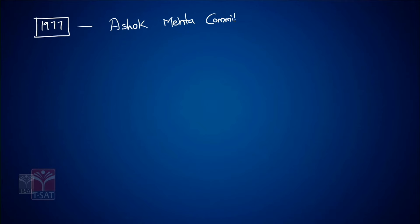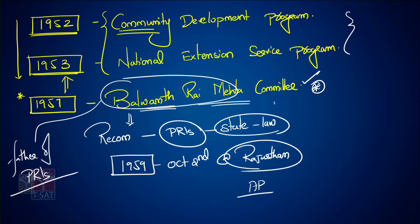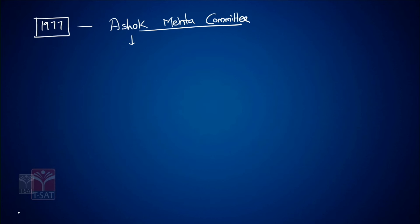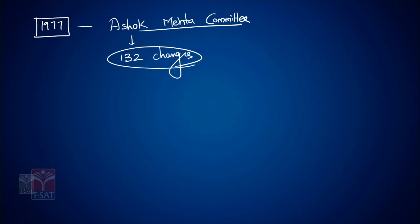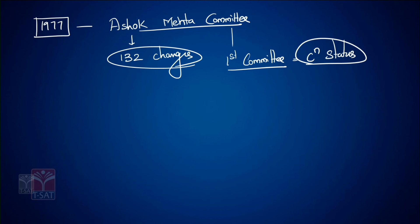In 1977, the Janata government constituted the Ashok Mehta Committee to review the Panchayati Raj institutions in India — all constituted by state law. Ashok Mehta Committee recommended 132 changes. Most importantly, Ashok Mehta Committee was the first committee to recommend constitutional status to the existing Panchayati Raj institutions in India. Very, very important.